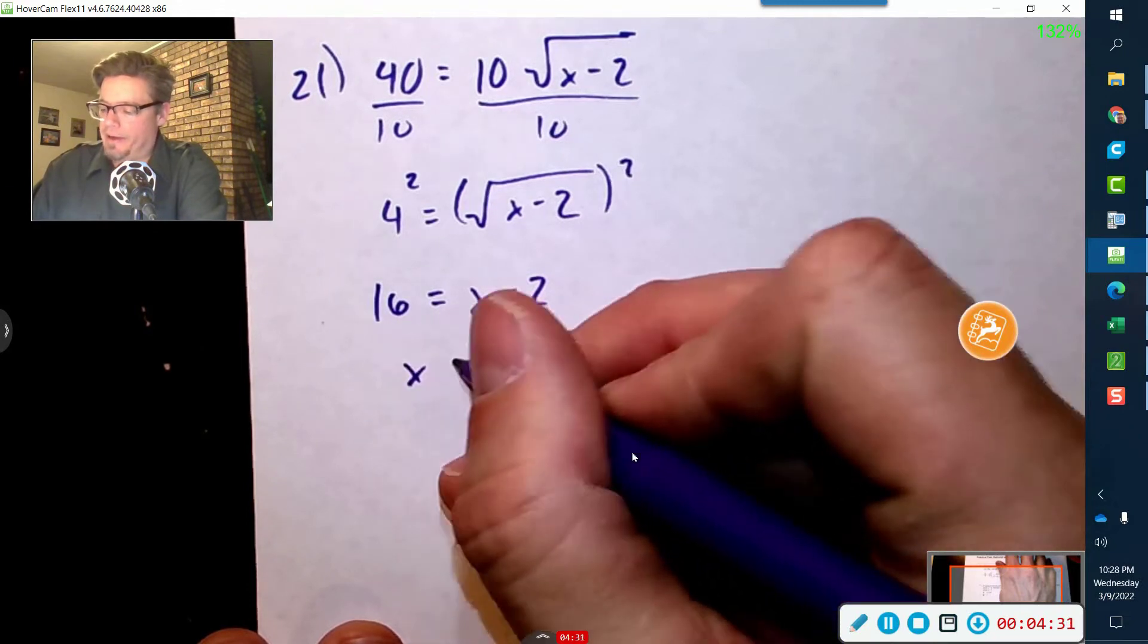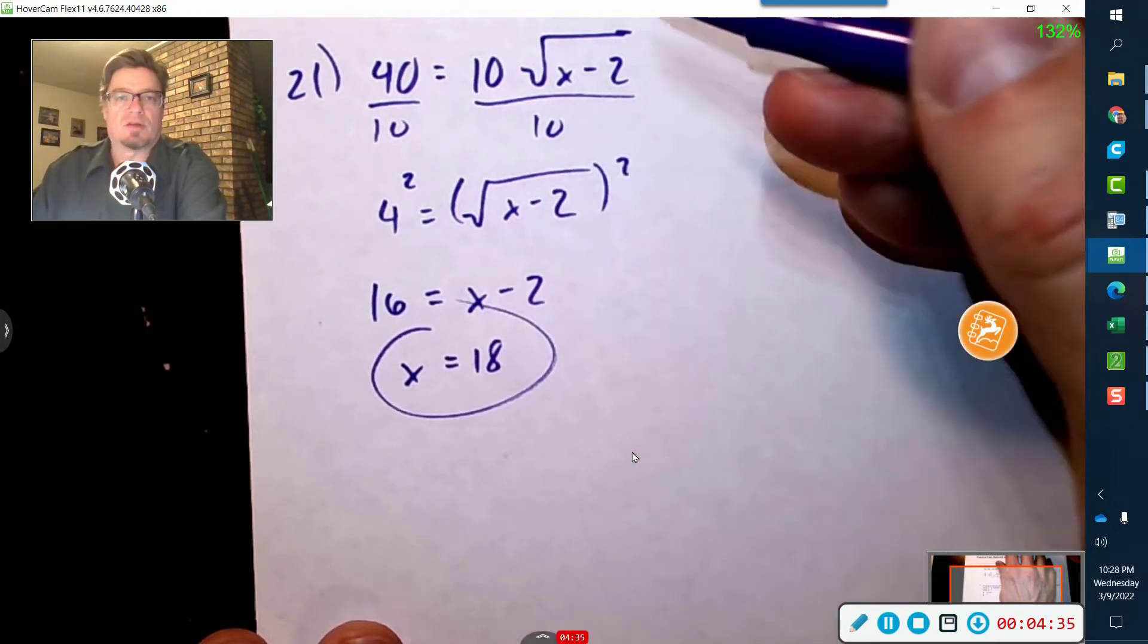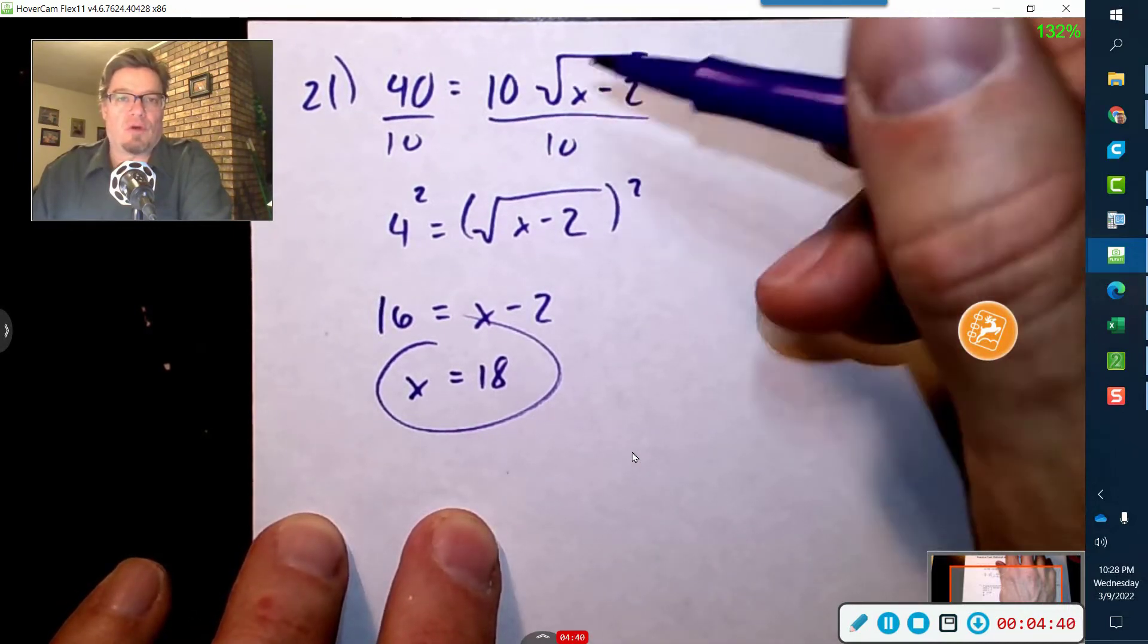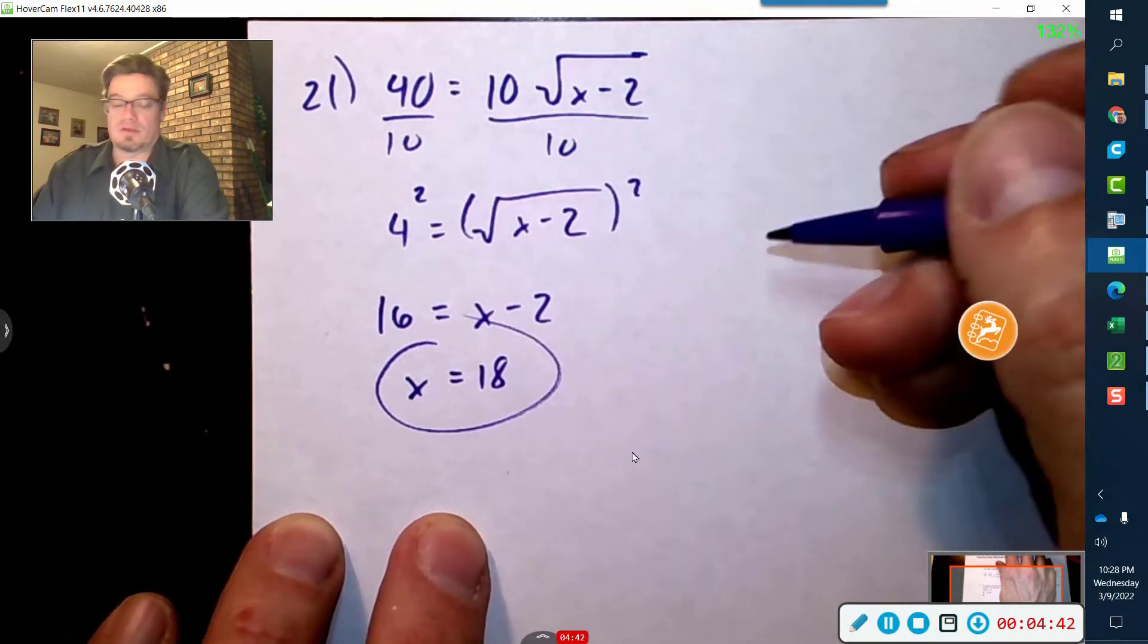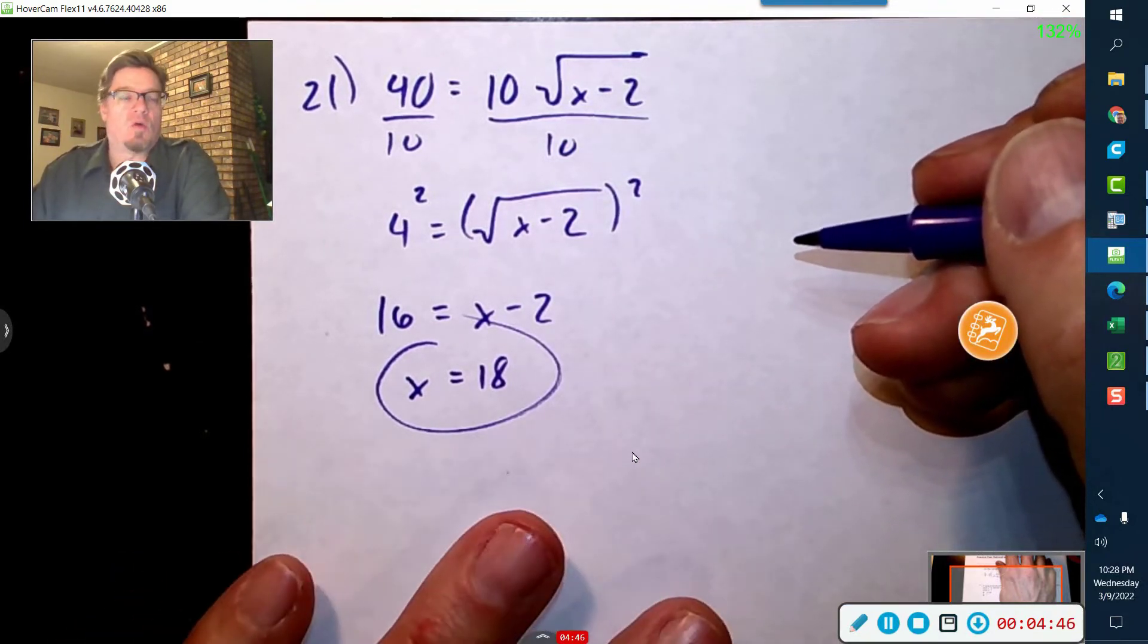So now when I add two to both sides I get eighteen. Now eighteen is our answer as long as it doesn't produce a problem. Eighteen minus two is sixteen, square root of sixteen is four, four times ten is forty. Okay, so that works. All right, so our answer is just eighteen. There's no other extraneous solutions.